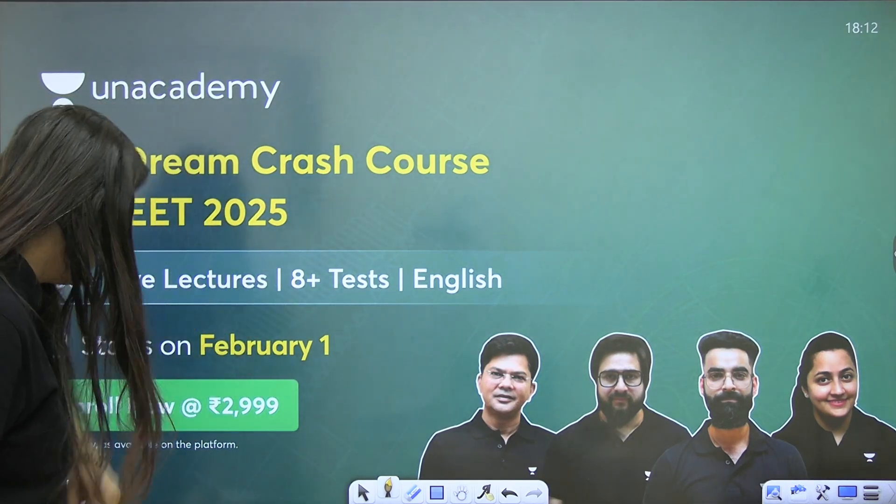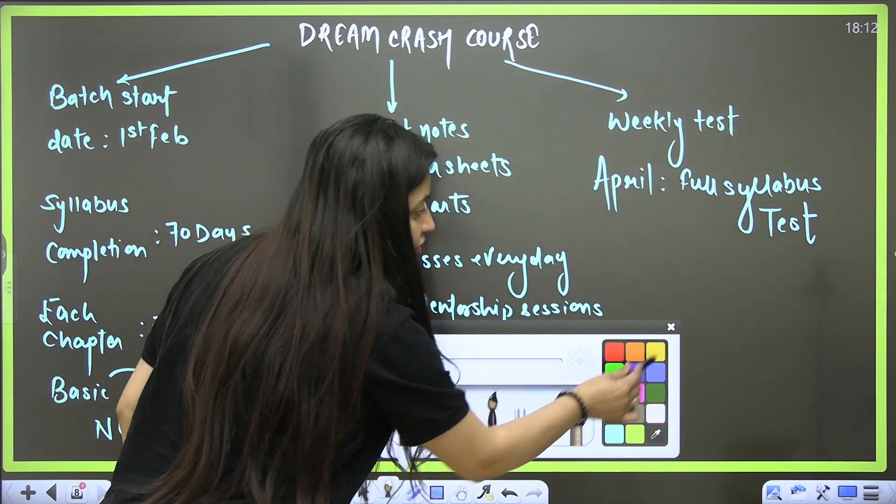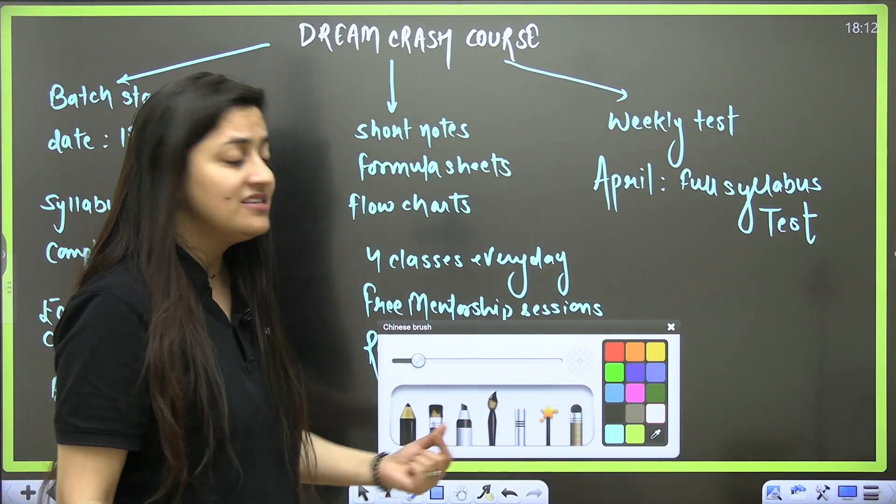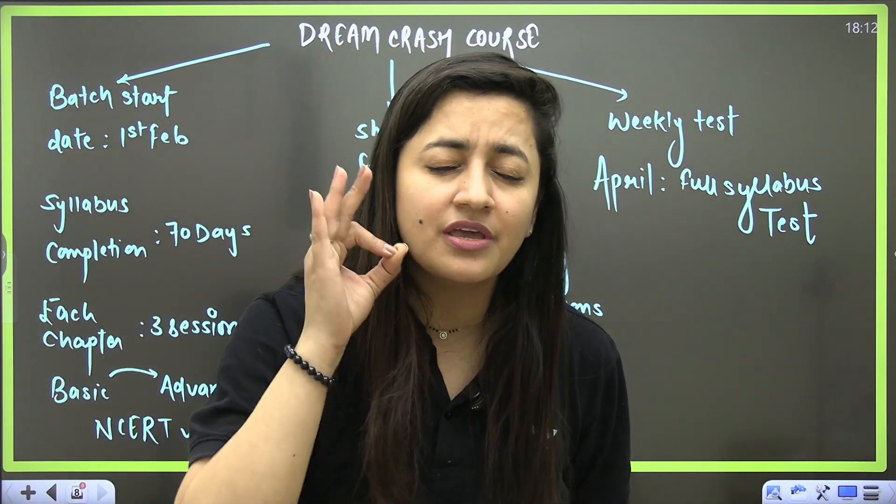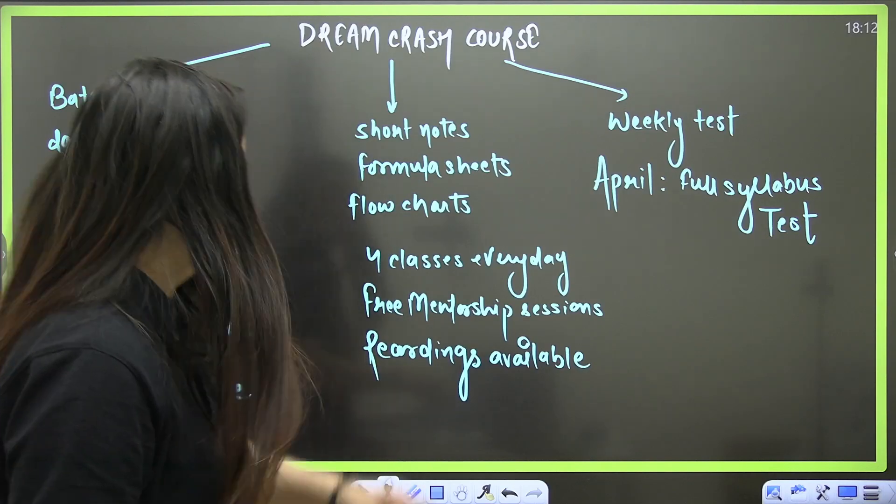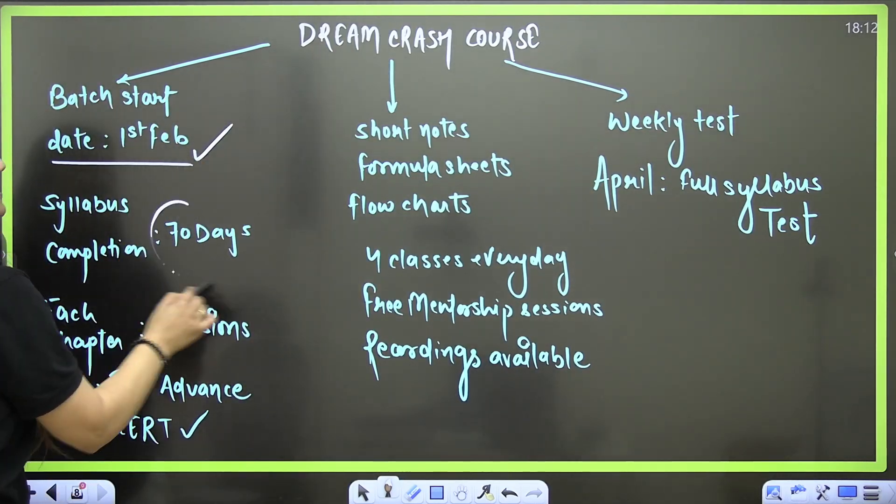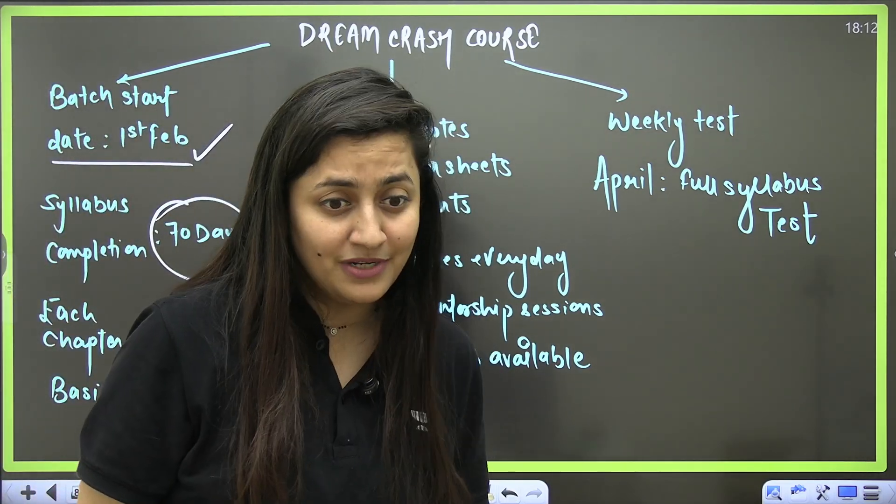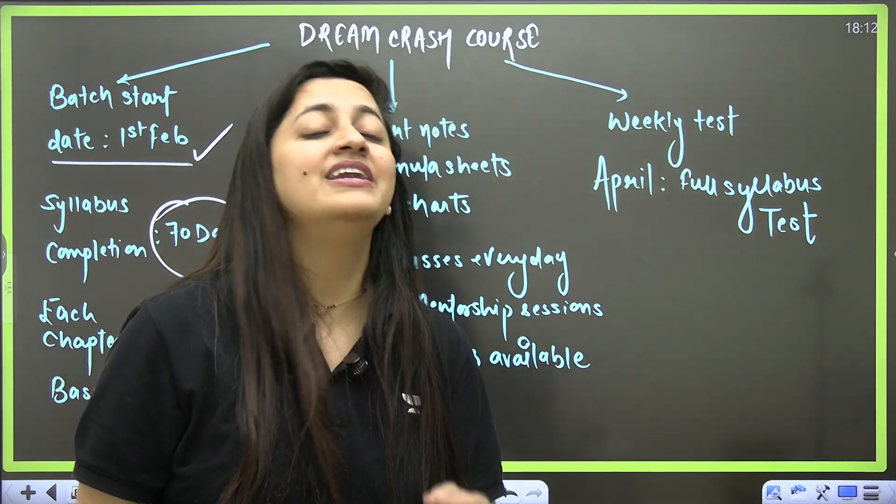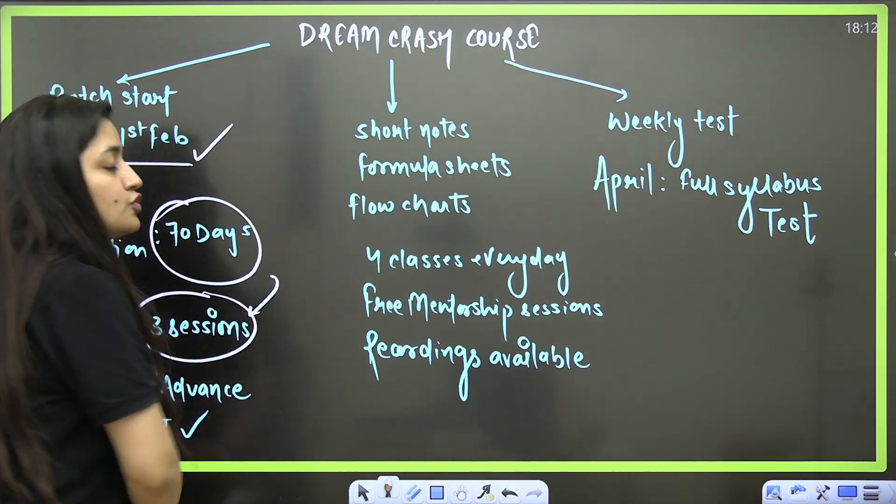Let me explain the perks of this batch and why this batch is unique, most important for your selection. The batch will start on 1st February. Within 70 days we are going to complete your syllabus. If you're thinking, is it possible to complete the syllabus within 70 days? Yes, it is possible because we will give three sessions to each chapter.